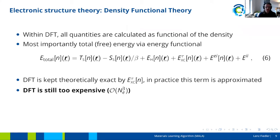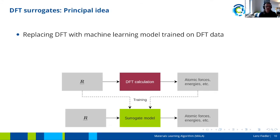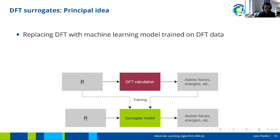Even with all these sophisticated approximations and codes that exist for DFT, DFT is still too expensive — it still scales with order N_e to the power of three, which is unfavorable for many practical problems we're looking at. This is now where DFT surrogates come into play. MALA is one of these DFT surrogates. The idea is simply to replace DFT with a machine learning model trained on DFT data — we perform DFT calculations for a set of atomic positions, train a surrogate model, and then access the same information at a fraction of the cost.